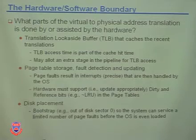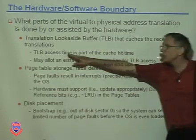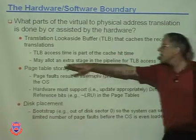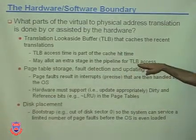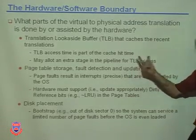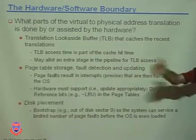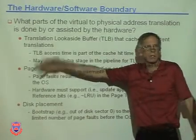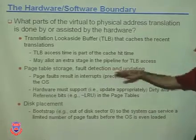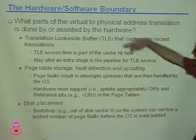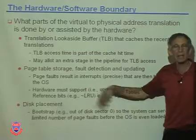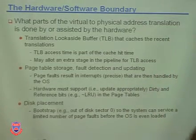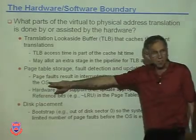The access time of the TLB is part of the cache hit time. Some pipelines, like Intel's, allocate an extra pipeline stage for TLB access because the pipeline has many stages and very short clock cycles. Second is page table storage, and fault detection and updating are also assisted by hardware. Page faults result in interrupts handled like exceptions, then passed to the operating system.